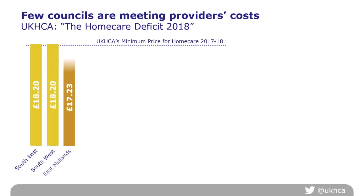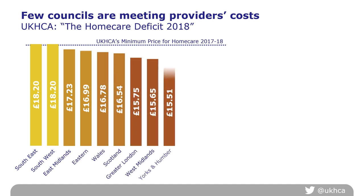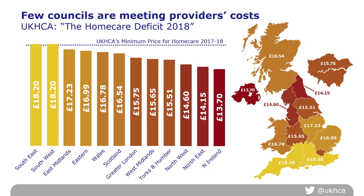We can get a national and regional picture of the prices that councils pay for state-funded home care from a freedom of information inquiry which UKHCA undertook in April 2018. We asked every council in Great Britain and the health and social care trusts in Northern Ireland to tell us the average price paid for an hour of home care and compared it to UKHCA's minimum price for the same period. There is distinct variation between what councils are paying, with particularly low prices in the northwest and northeast of England and Northern Ireland. The full detail of all councils' responses is provided in the main report, with a link at the end of the webinar.